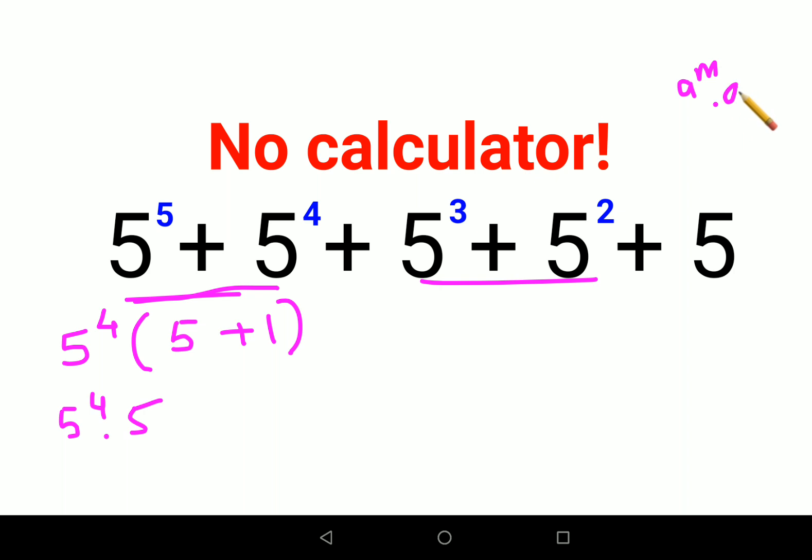When you have a raised to m times a raised to n, whenever you have the same base and indices are different and you're getting multiplied, the index gets added. So this eventually comes out to be 5 raised to 5.